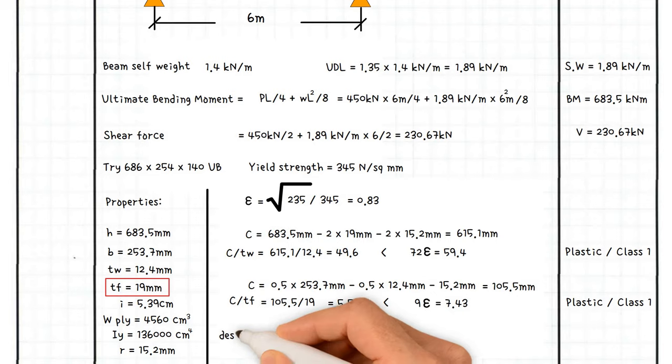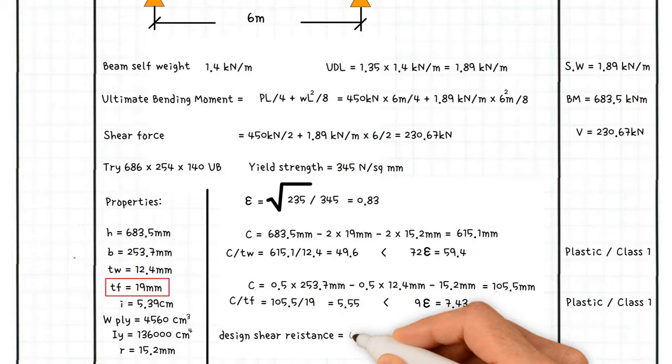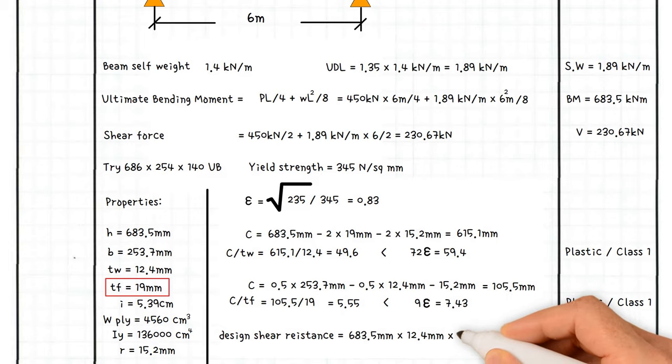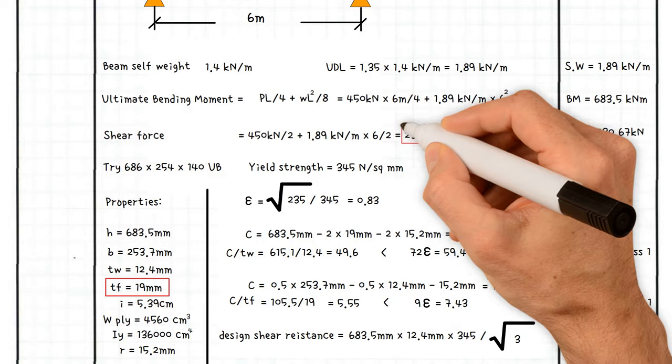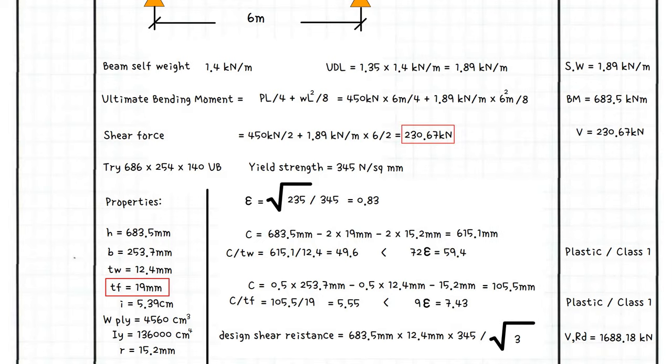Therefore, the design shear resistance equals depth of the beam 683.5 times web thickness 12.4 millimeters times the yield strength of the steel 345 divided by the square root of 3 divided by 1000 to convert to kilonewtons. This gives us a value of 1,688.18 kilonewtons, which is greater than applied shear 230.67 kilonewtons. Therefore, the shear resistance of section is acceptable.